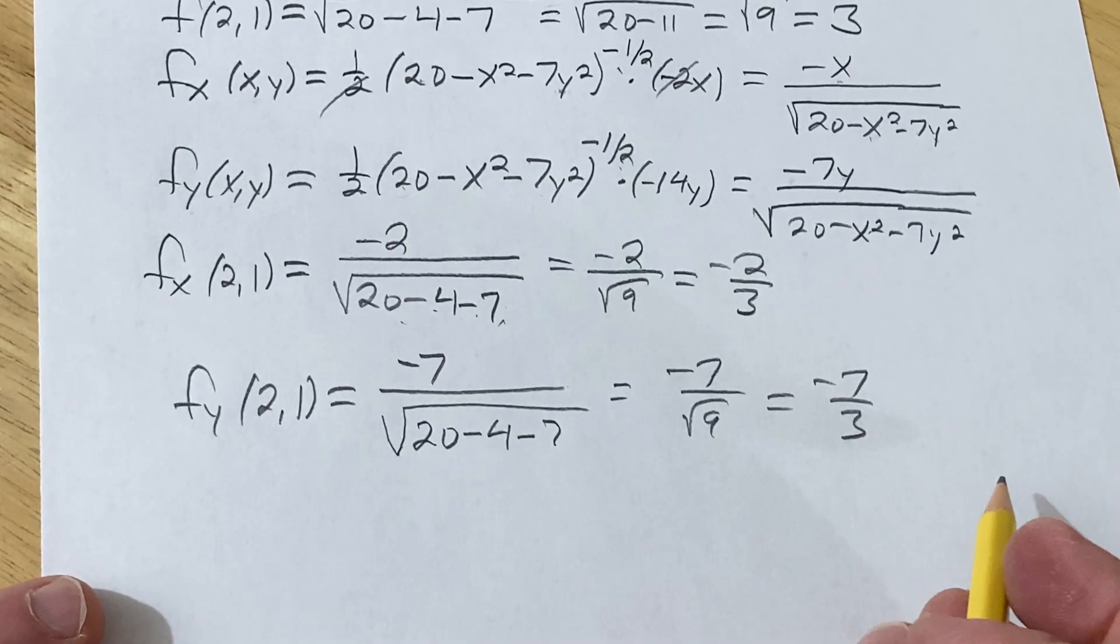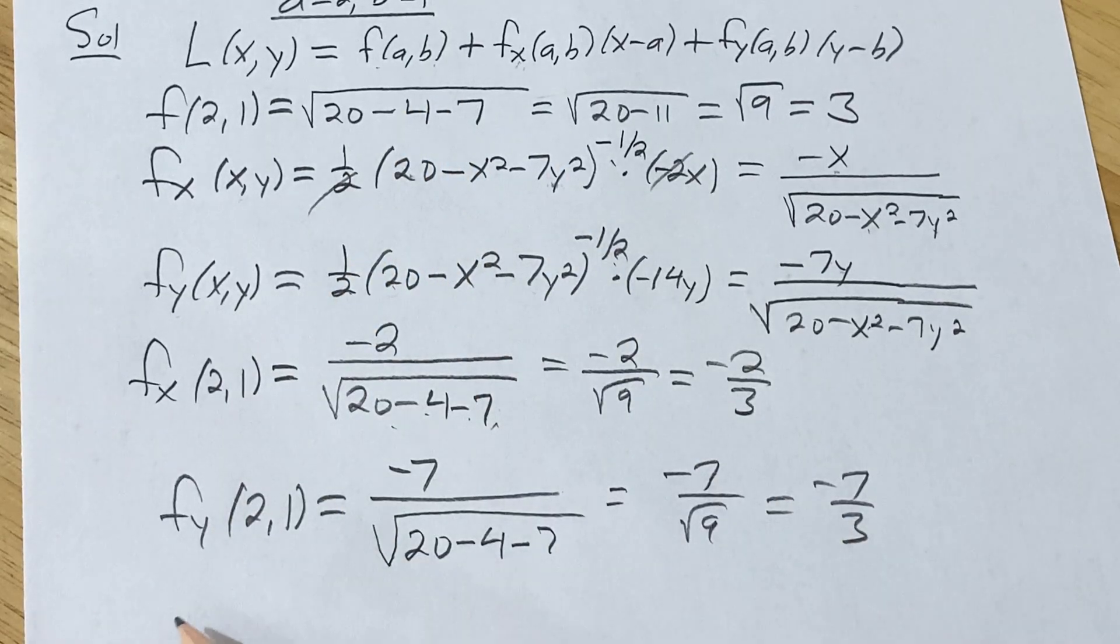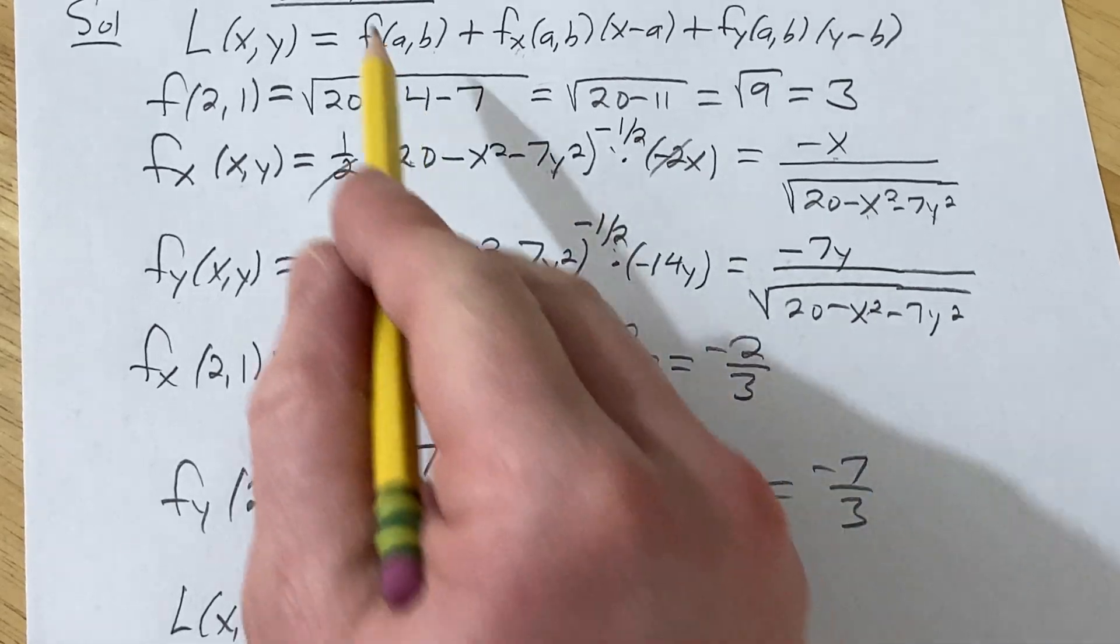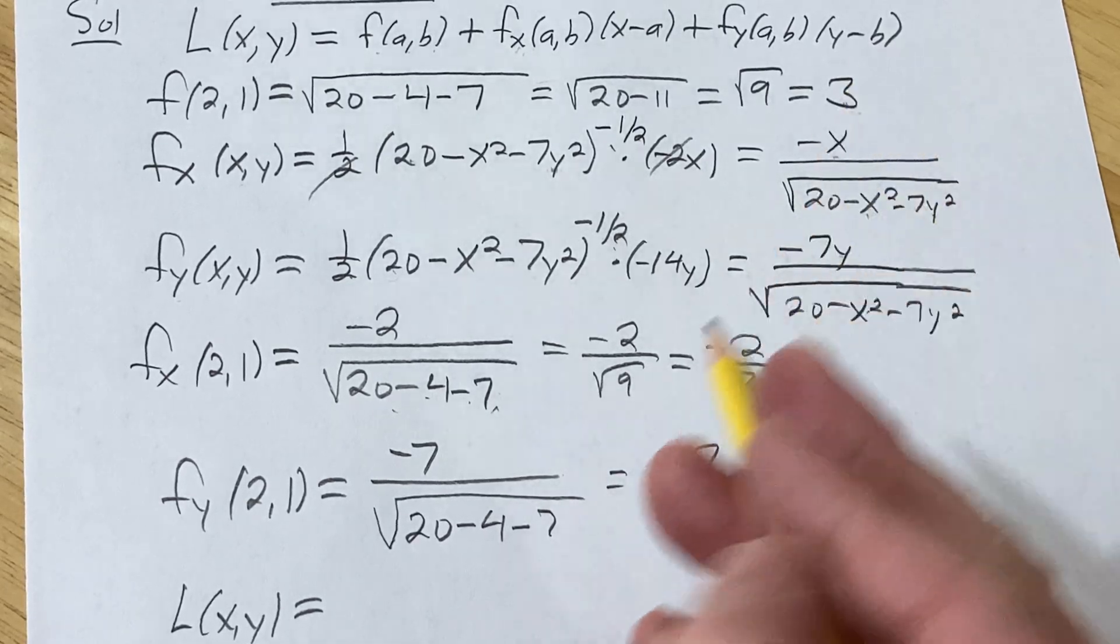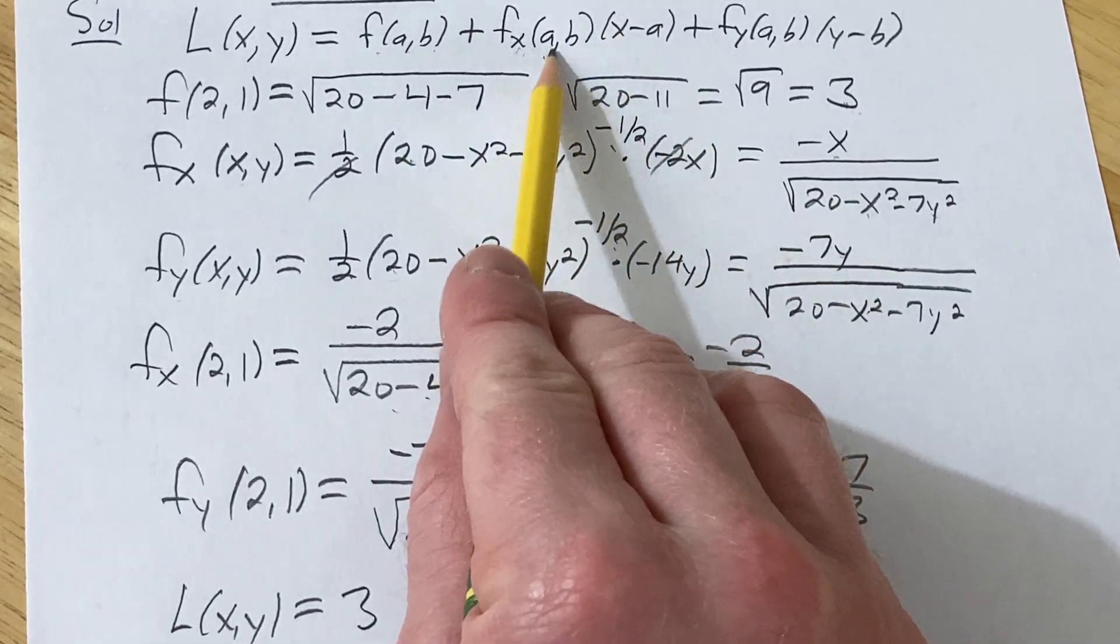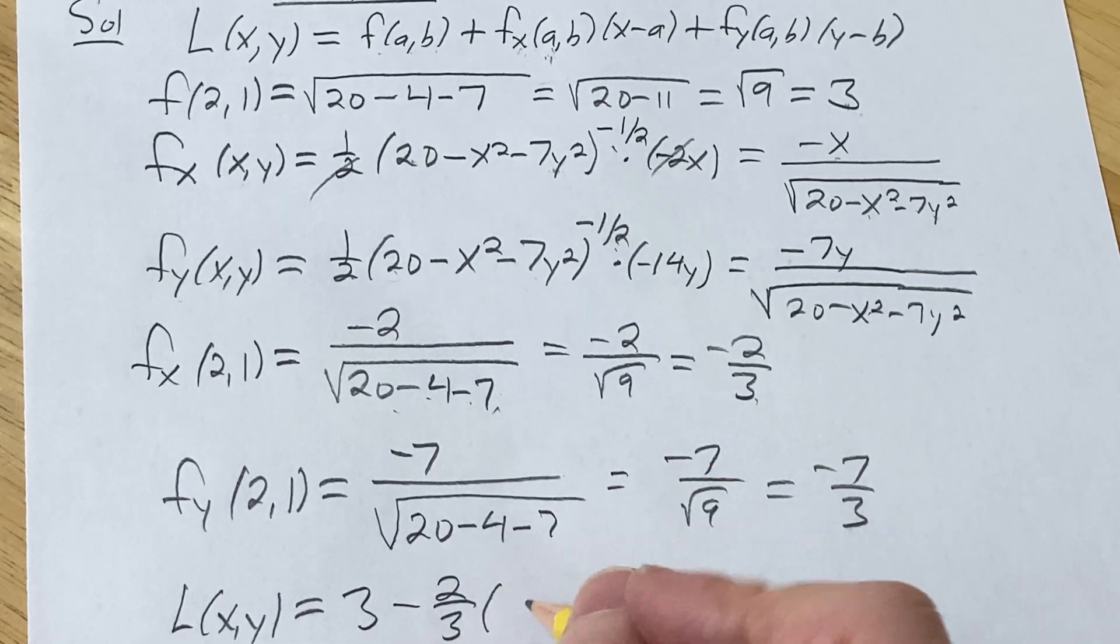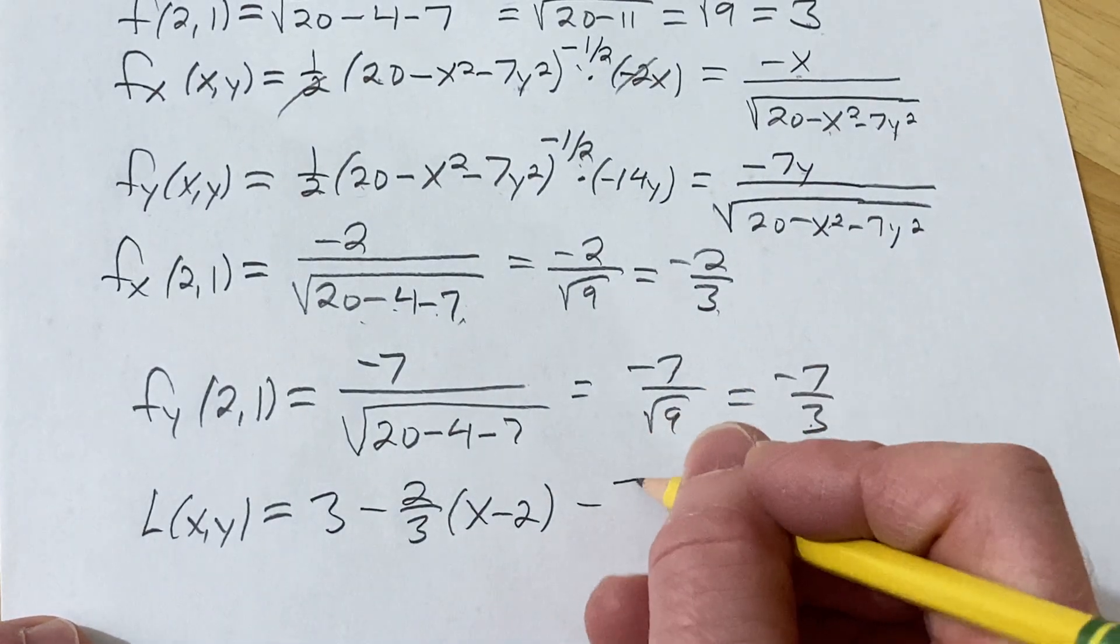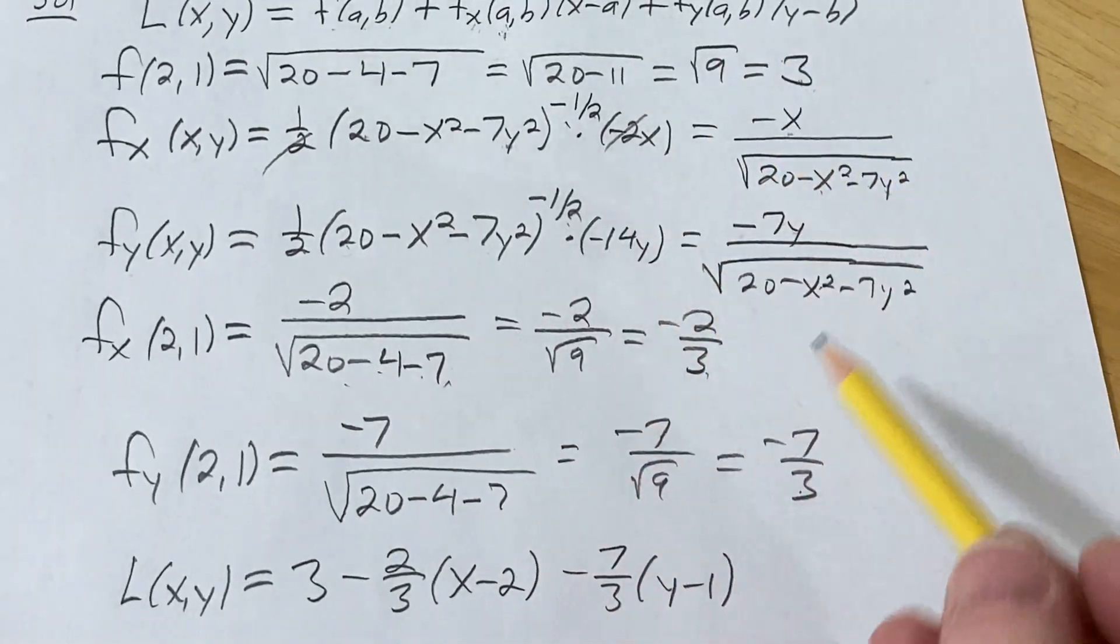All right, let's go ahead and plug everything into the formula. I'm just going to go ahead and write the formula. So L(x,y). So it's f(a,b), which we worked out, we said that was 3. And then fx, that one is -2/3, so -2/3. And x minus a, so (x-2). And then the next one was fy, which is here, -7/3, and (y-1). All right, y minus b, (y-1).